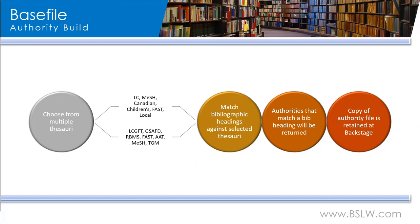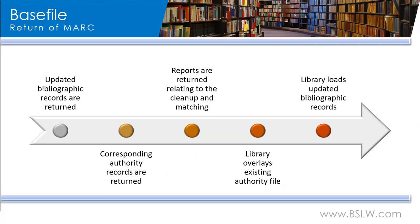All your bibliographic records are then matched against your prescribed vocabularies. We do match in a hierarchical fashion, so we'll start with the full heading string first to find an authority record for the whole heading. If no full match is found, we'll start removing subfields from the end of the heading to try to find the next best partial match. All headings that find matches, whether full or partial, will have the authority records returned. A copy of these authority records is then retained and maintained at Backstage. Deliverables from the base file include updated bibliographic records, all authority records retrieved during the matching process, and any related reports.